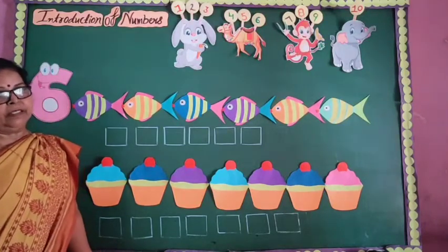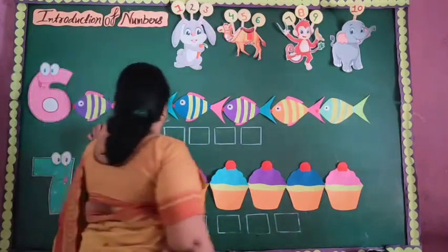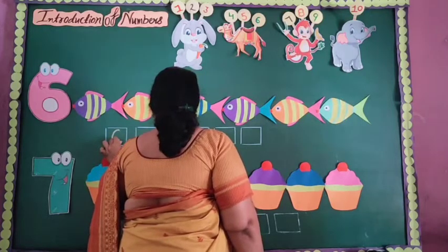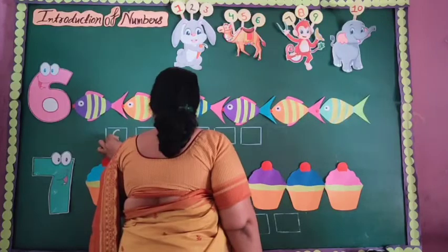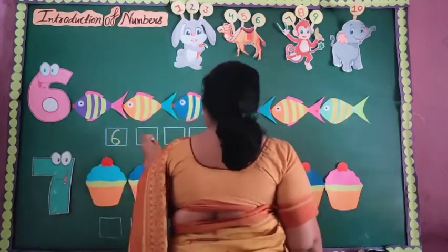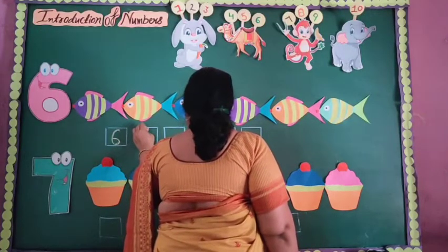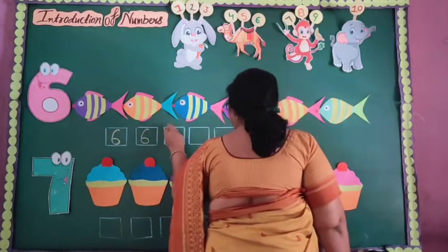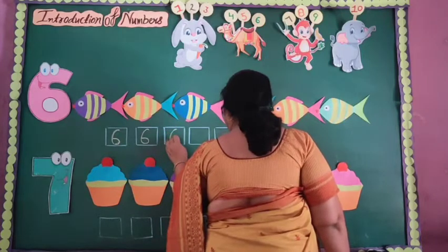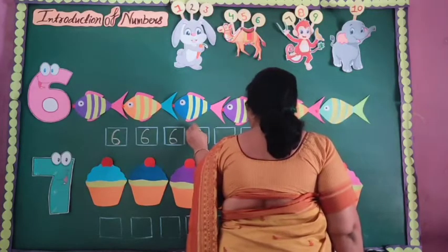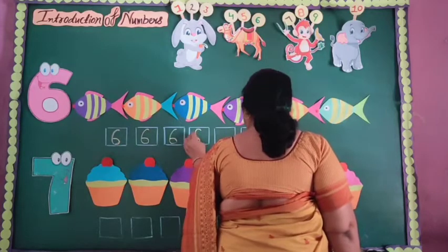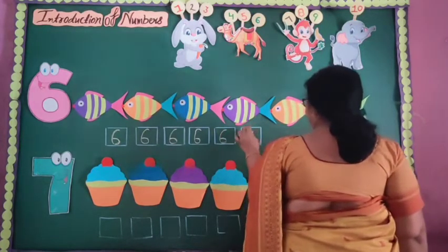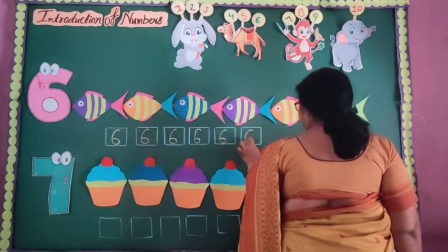Now, how to write number six? You make a curved line like this, and make a circle at the bottom. Let's make six. Draw a curved line and make a circle at the bottom.